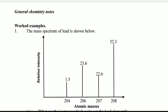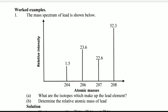Here is an example of mass spectrum. For example, here we had four isotopes. One of the isotopes has a relative abundance of 1.5 and its mass is 204.